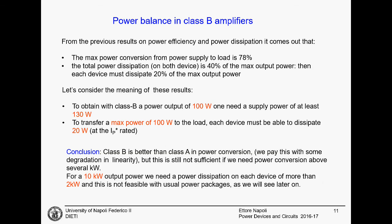From the previous results, we can then see the maximum power conversion efficiency is 78%. The total power dissipation on both devices is 40% of the maximum power on the output. This means that since we have two devices, each one has to dissipate just 20% of the power on the load. That is much better than before. Before we had one device that had to dissipate in the worst case twice the power of the load.